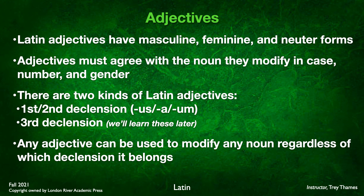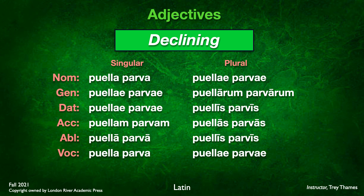There are two different kinds of Latin adjectives; we'll talk about third declension later. Right now we're looking at first and second declension adjectives, which end in -us, -a, or -um depending on whether they're masculine, feminine, or neuter. Any adjective can modify any noun regardless of its declension — a third declension adjective can modify a first declension noun — as long as they agree in case, number, and gender. The word for small is parvus, parva, parvum. We pair it with the first declension feminine noun puella (girl), so we use the feminine form parva.